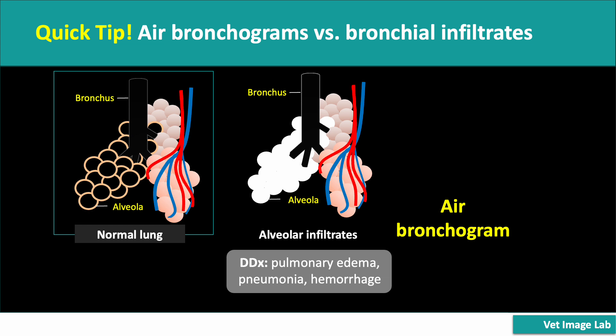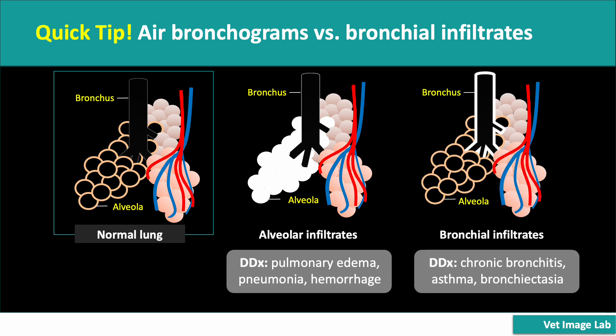The key here is that only the alveolar spaces are filled with fluid or cells, while the bronchi remain open. This allows us to clearly see these dark air-filled bronchi within the bright infiltrated lung field, a hallmark sign of alveolar infiltrates. In bronchial infiltrates, the bronchial walls become visible on X-rays due to fluid accumulation or thickening. Normally too thin to be seen, when inflamed or thickened they appear as white, well-defined lines surrounding the airway — the characteristic tramline or ring-like appearance — unlike alveolar infiltrates where air bronchograms stand out against a bright lung background. Bronchial infiltrates make the airway walls more prominent while keeping the airway itself dark due to the air inside. This distinction is key when differentiating between bronchial and alveolar patterns on radiographs.